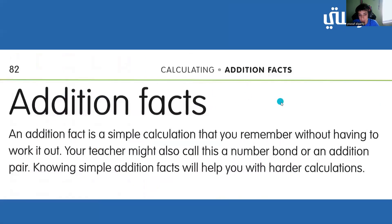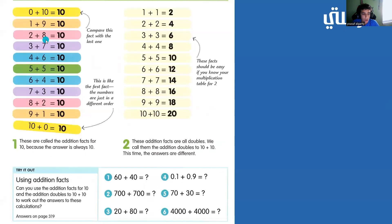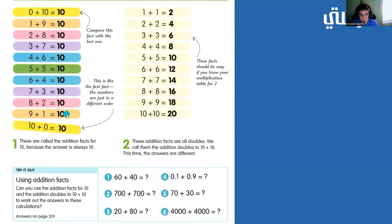Addition facts. Here we have addition facts for 10, because the answer always equals 10: 0+10=10, 1+9=10, 2+8=10, 3+7=10, 4+6=10, 5+5=10, 6+4=10, 7+3=10, 8+2=10, 9+1=10, 10+0=10.